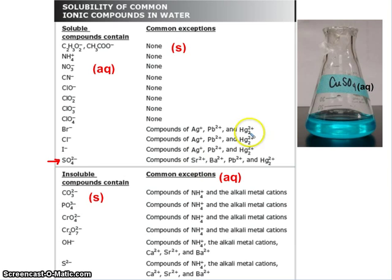We just have to make sure that our cation, this metal right here, is not one of the exceptions. And I notice that just strontium, barium, lead 2, and this mercury ion are the only sulfates that would give me a solid and not dissolve.